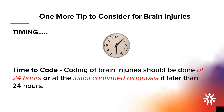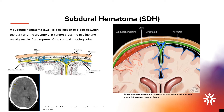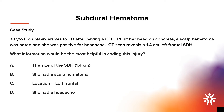The first injury we will cover is subdural hematomas, which is a collection of blood between the dura and the arachnoid, and usually results from a sudden blow to the head that tears blood vessels along the brain. People with bleeding disorders and those who take blood thinners are more likely to develop a subdural hematoma. Case study: a 78-year-old female on Plavix arrives to the ED after a ground-level fall. She hit her head on concrete, a scalp hematoma was noted, and she was positive for a headache. The CT scan reveals a 1.4-centimeter left frontal subdural hematoma. What information would be most helpful in coding this injury?